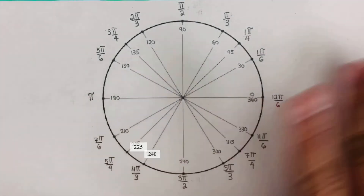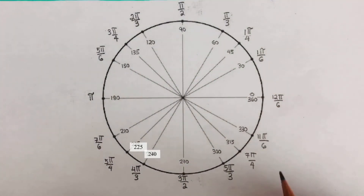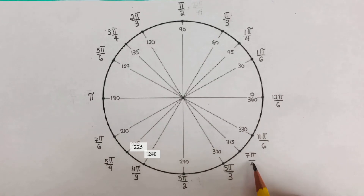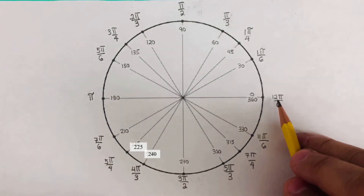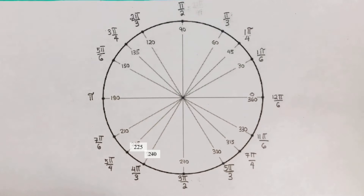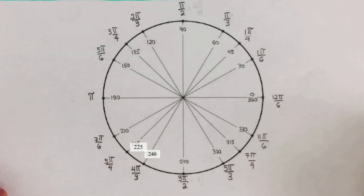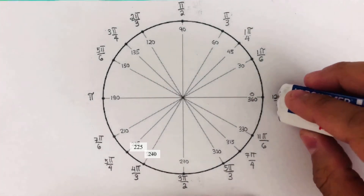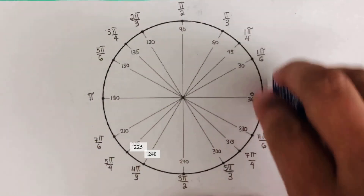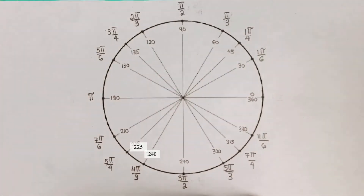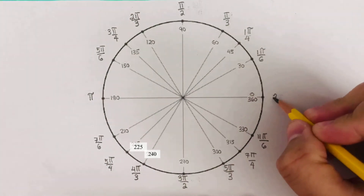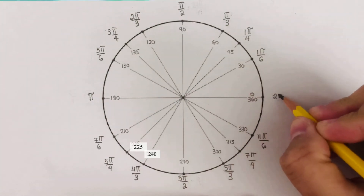For 7π/4 — that's already in reduced form. And then remember that 12π/6 can still be reduced: 12 divided by 6 is 2, so this can be written as 2π. So I can go ahead and write this as 2π right here.